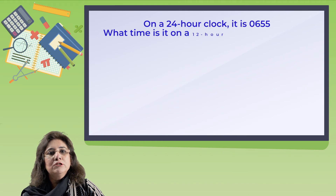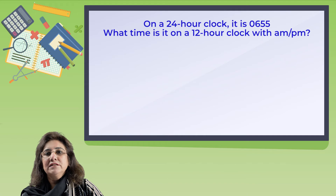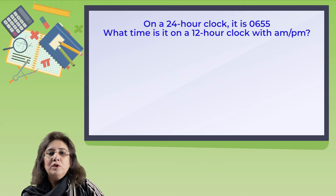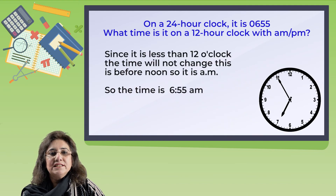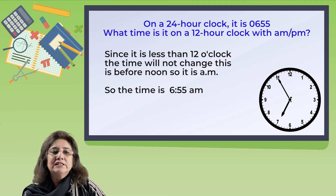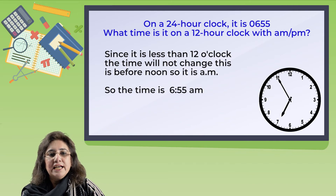Let's look at another example. On a 24-hour clock it is 06:55 — what time is it on a 12-hour clock with AM or PM? Since it is less than 12 o'clock, the time will not change. This is before noon, so it is AM. The time is 6:55 AM.